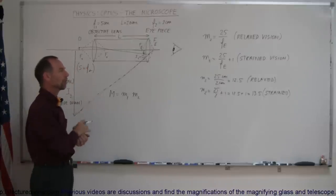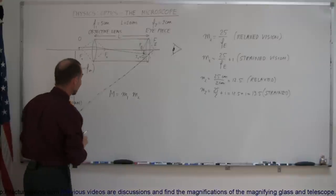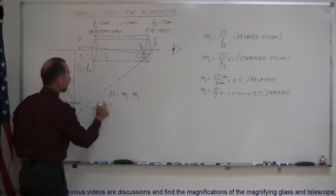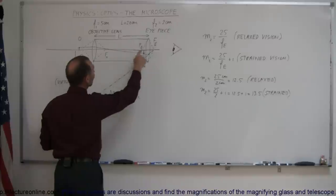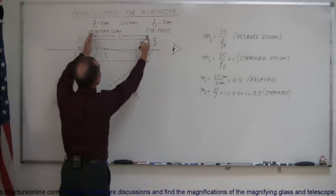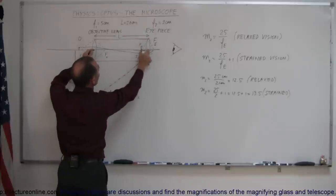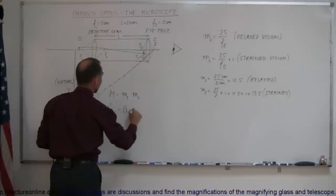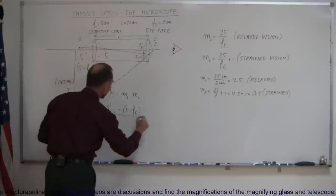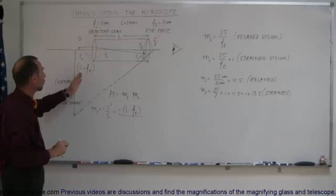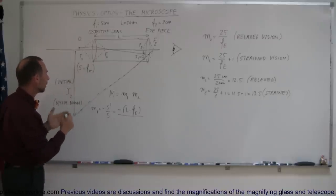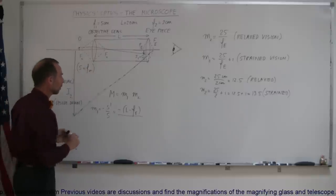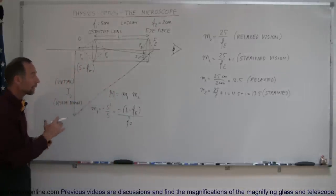Now we still have to find the magnification of the first lens. We use the typical magnification equation: M₁ = −S′/S. The image forms just inside the focal point of the second lens. Since L = 20 cm and the focal length of the eyepiece is 2 cm, S′ = L − f_e = 20 − 2 = 18 cm. As a starting approximation, we set S equal to the focal length of the objective lens, and later we'll make a small adjustment to that.